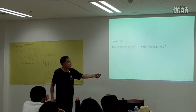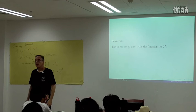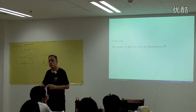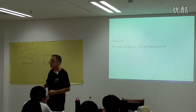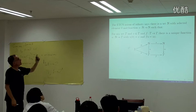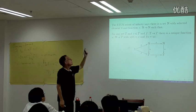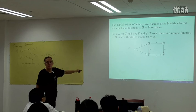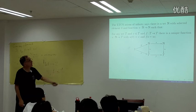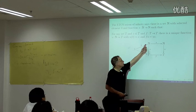The ETCS axiom of infinity says: there is a set ℕ with a selected element zero and a selected successor function s, forming a co-algebra, such that for any set T with a selected element and a function to itself, there is a unique function from ℕ to T taking zero to that element and making the successor composites equal.